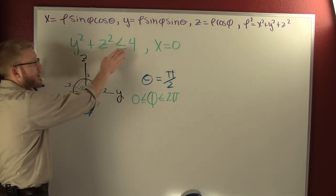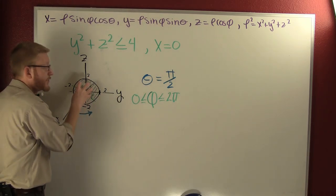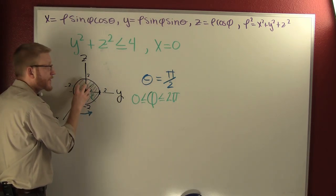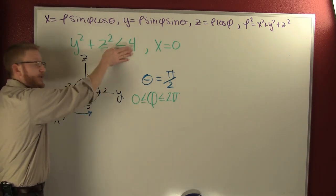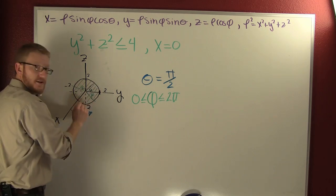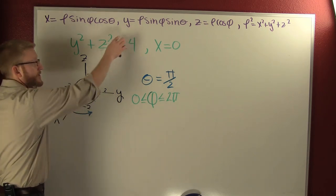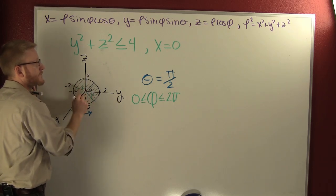Now, because this is a solid disk, had this been an or equal to been a circle and we wouldn't have had the inside. Had this been just strictly less than, then we would have a dotted boundary. But because it's smaller than or equal to, phi can be phi.